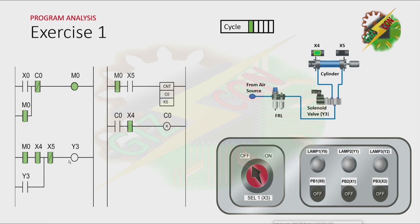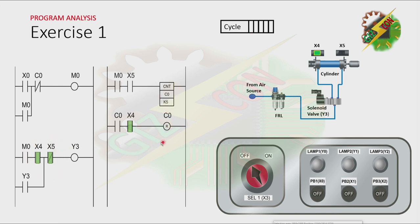Now let's assume that 5 cycles are already complete. Because of that, it will cause counter 0 to turn on. And when the cylinder is at the fully retracted position, it will automatically reset the counter and cause M0 to turn off, breaking the latching. Because M0 is off, the normally open contact of M0 will turn off, and the cycle will not repeat anymore. And because the counter is already reset, the normally closed contact of the counter will go back to its initial state.